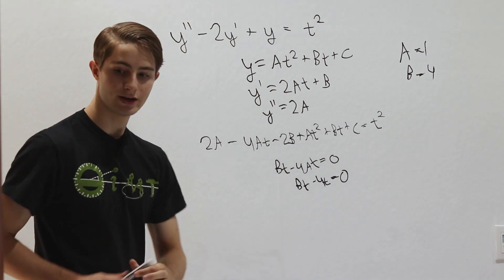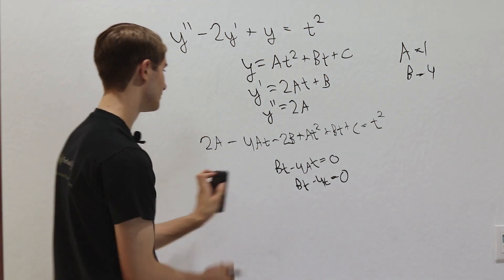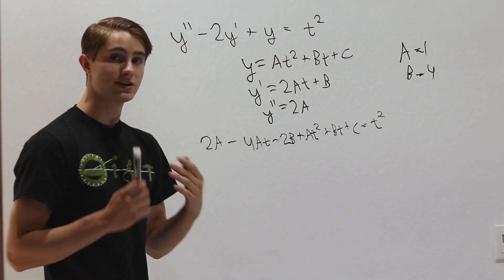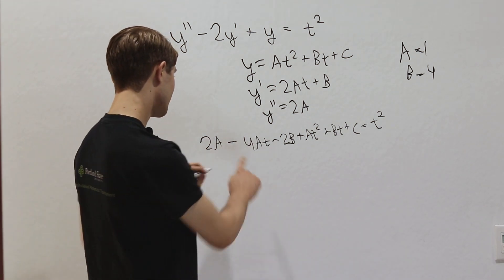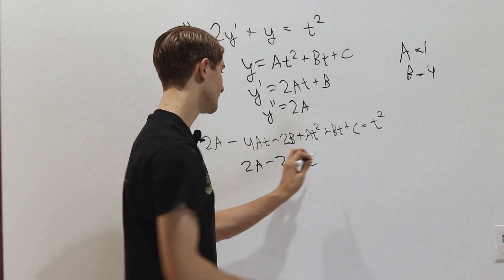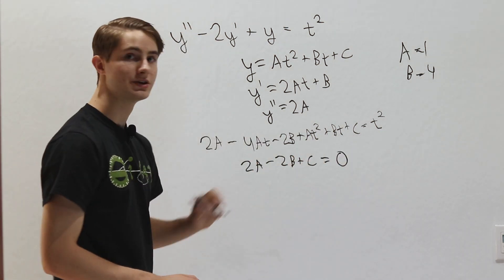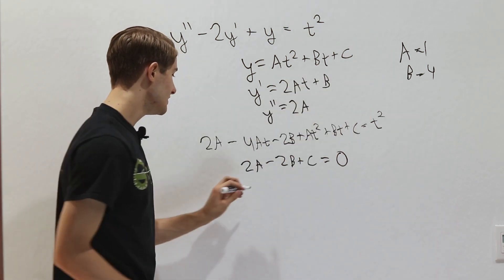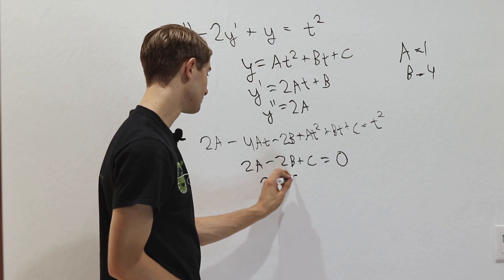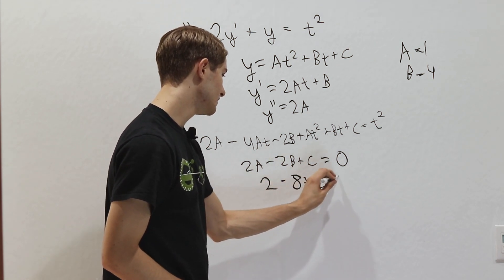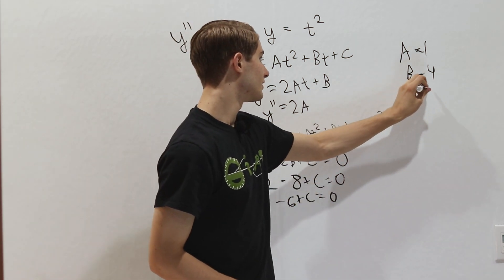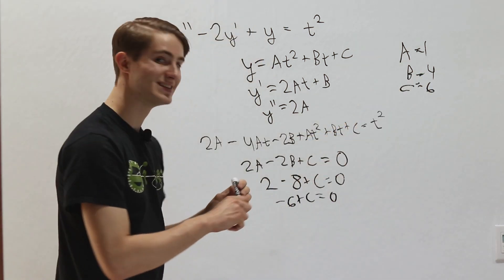Now we solve for c. Looking at constant terms: 2a minus 2b plus c equals 0 (since there are no constants on the right side). With a equals 1, that's 2 minus 2b. Since b equals 4, we get 2 minus 8 plus c equals 0, which gives negative 6 plus c equals 0, so c equals 6.